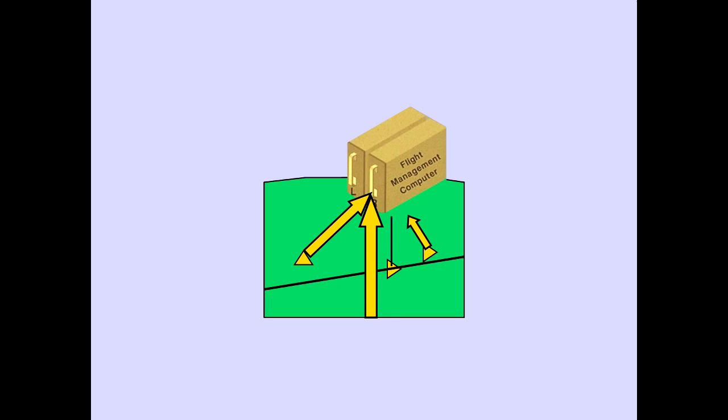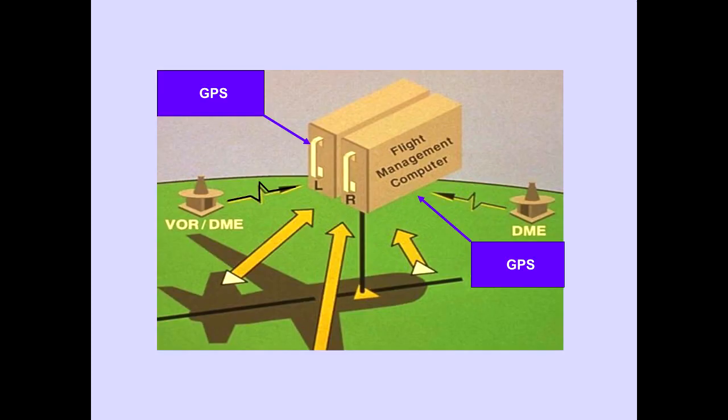These navigation errors do not prevent accurate navigation since the FMC computes IRS position data as a weighted average of all three IRUs. If GPS or VOR DME signals are being received, the flight management computers use this information to further refine navigation information. Details on FMC navigation are covered later in flight management training.